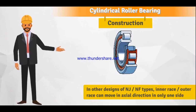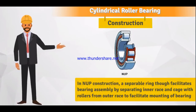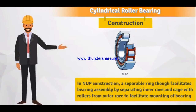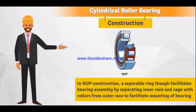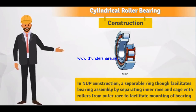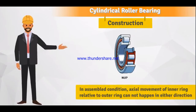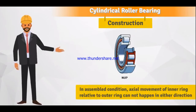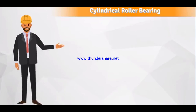In other designs of NJ or NF types, the inner or outer race can move in the axial direction in only one side. In NUP construction, a separable flange facilitates bearing assembly by separating the inner race and cage with rollers from the outer race. Once mounted in assembled condition, axial movement of the inner ring relative to the outer ring cannot happen in either direction.